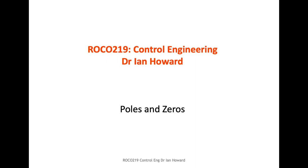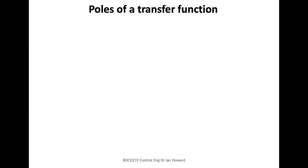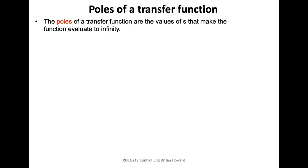Let's talk about poles and zeros of transfer functions. What is a pole and what is a zero? If you've got a transfer function, a pole is going to be the value of the S-domain variable S which makes the function evaluate to infinity.